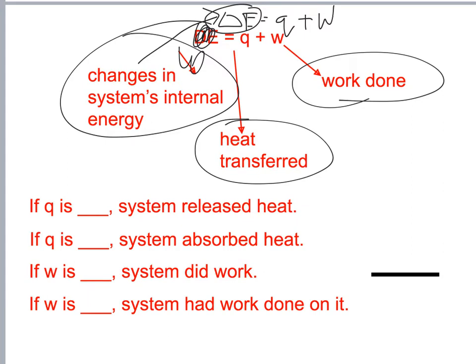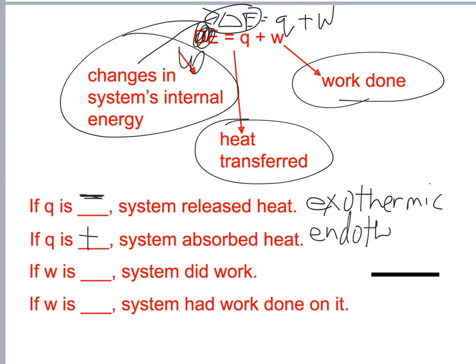If Q is negative, the process is exothermic. If Q is positive, it's endothermic. If W is negative, that means the system did work. If W is positive, the system had work done on it.